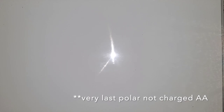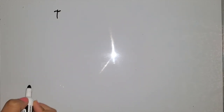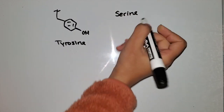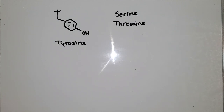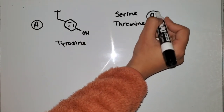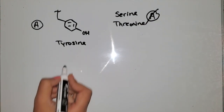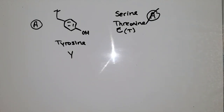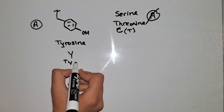The last polar not-charged amino acid looks a lot like phenylalanine. Alanine plus a phenyl group gives phenylalanine, and when you add an alcohol group it is tyrosine. Tyrosine, serine, and threonine are the only three amino acids that have an alcohol group attached. Tyrosine is aromatic, while serine and threonine are not. Tyrosine's one-letter code is Y because T is already used for threonine — Y comes from the second letter of tyrosine. The three-letter code is TYR.